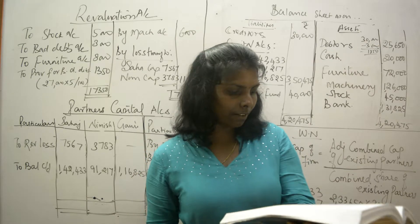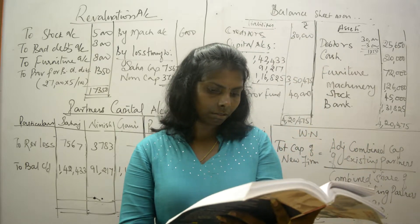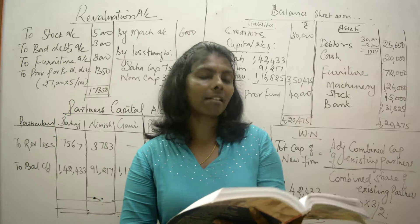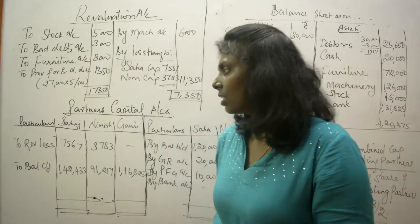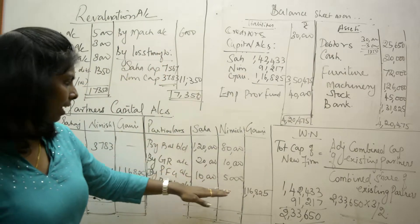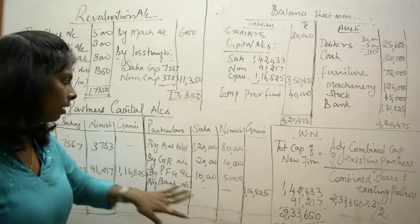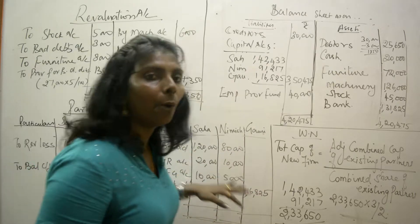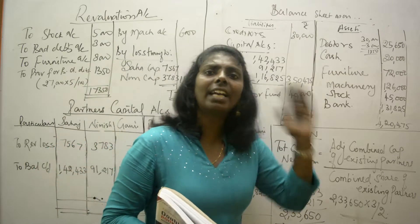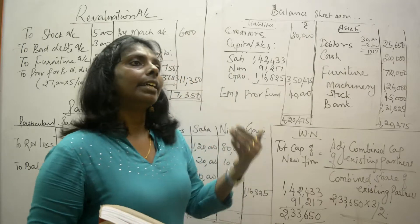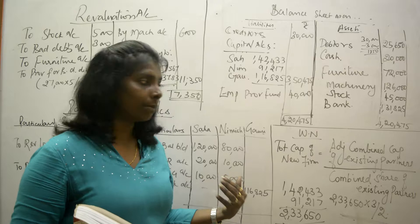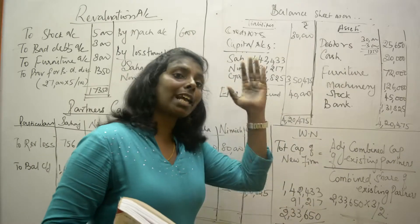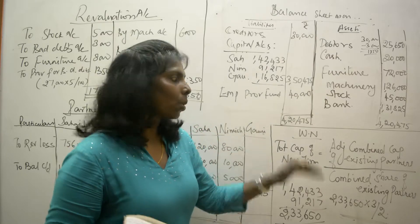The last adjustment: prepare the revaluation account, partners' capital account, and balance sheet. This is identified as Case 2 because the incoming partner's share of capital is not given in the problem. We have divided the general reserve and done premium for goodwill. The bank entry for the new partner's capital is missing — that's what we need to calculate now.